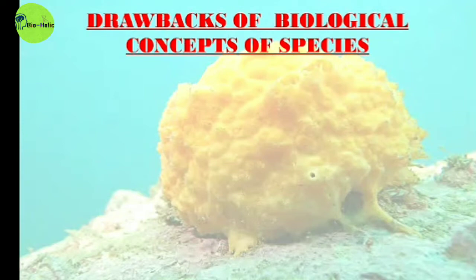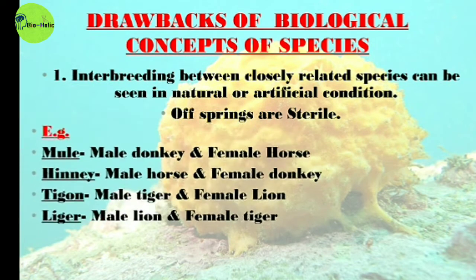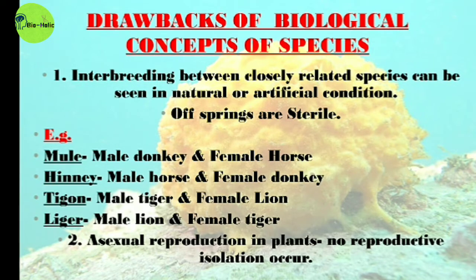The drawbacks of the Biological Species Concept are: first, interbreeding between closely related species like male donkey and female horse can occur in natural or artificial conditions, producing offspring like mules or hinnies, which are sterile. Second, this concept is not applicable in the case of asexual reproduction in plants, because no reproductive isolation occurs there.